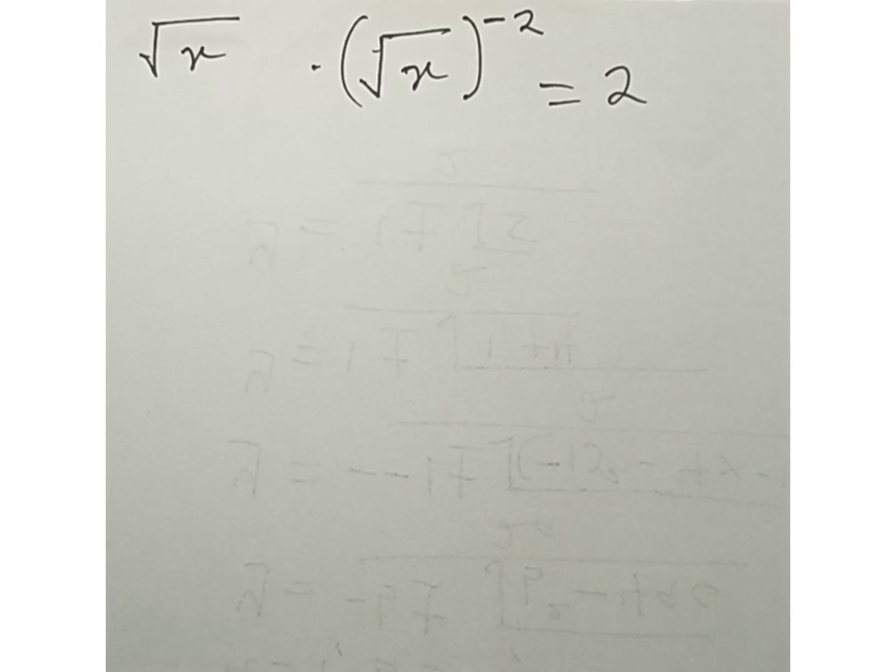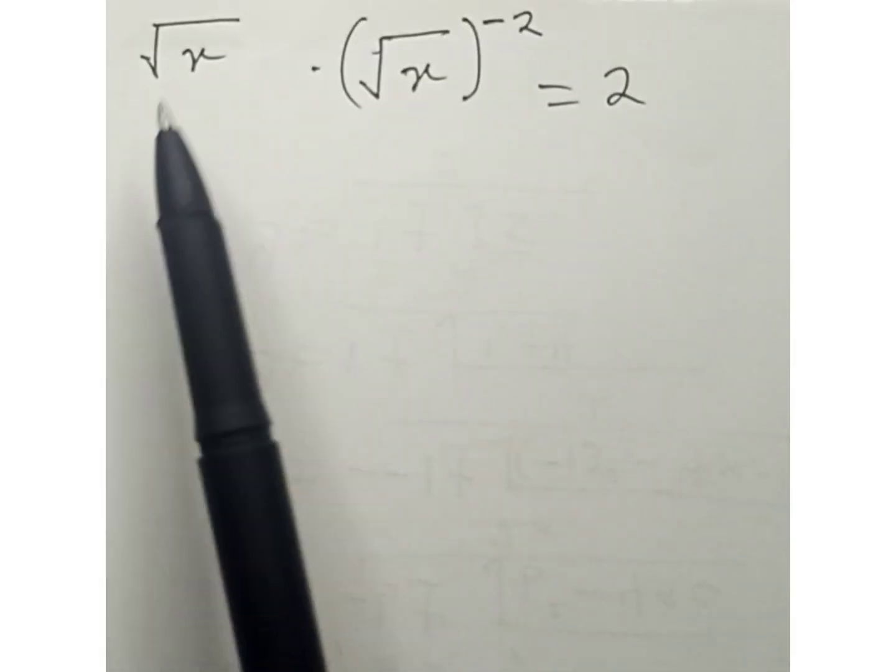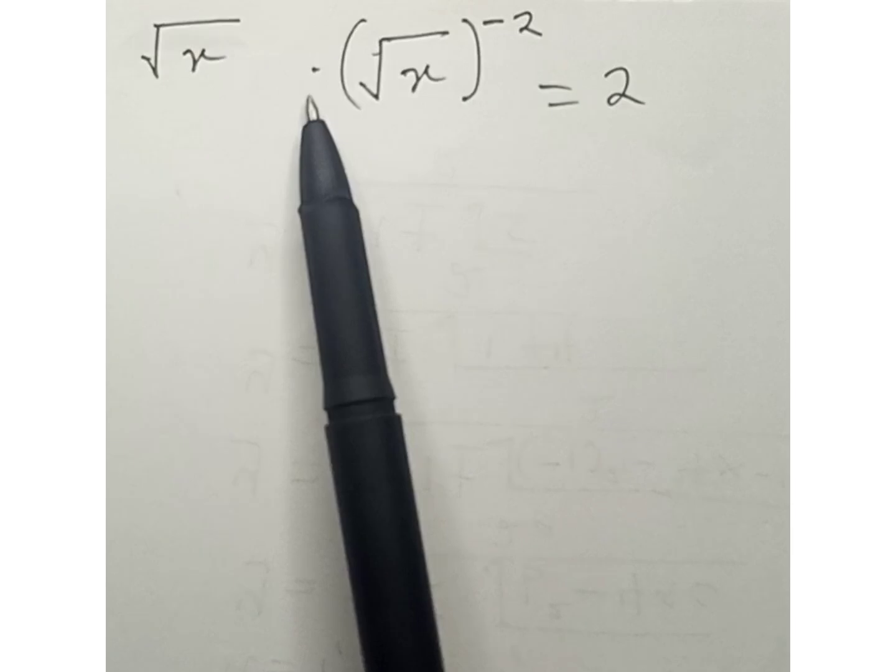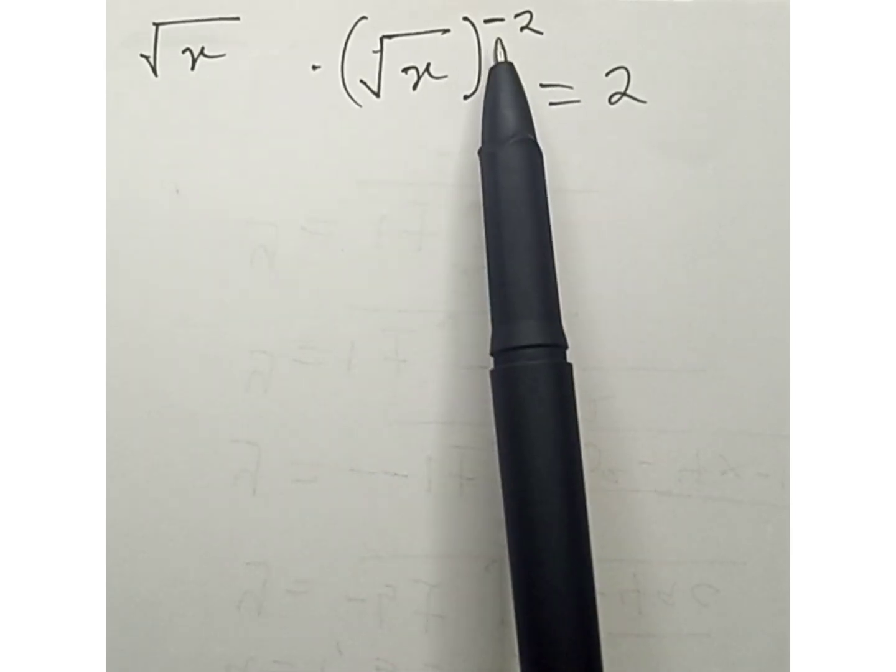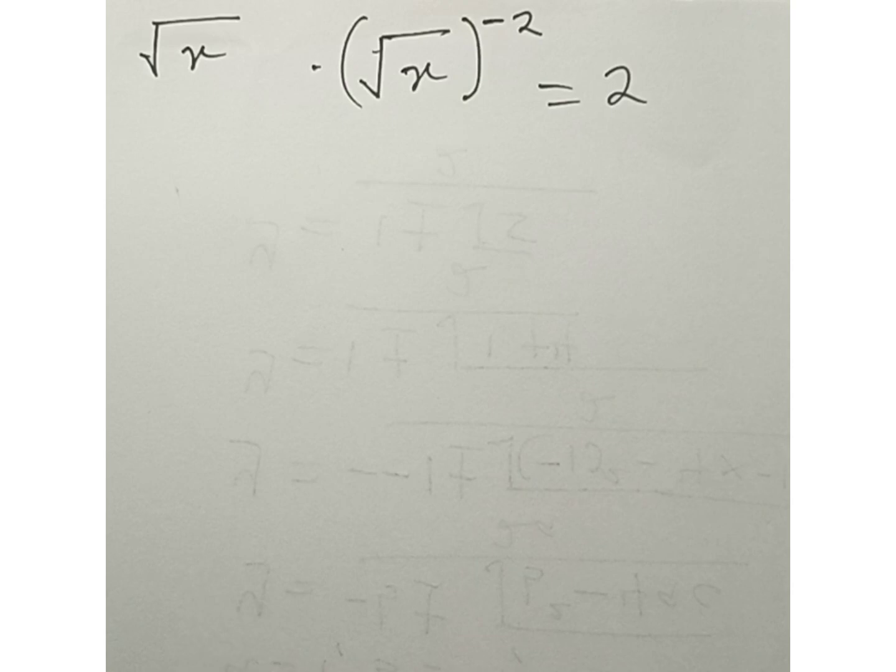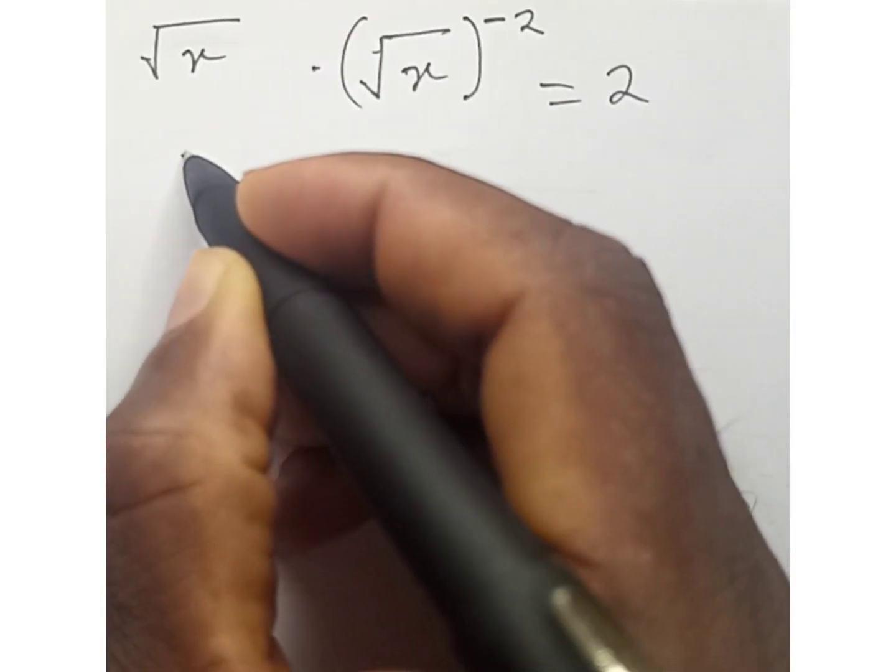Hi everyone, let's solve this: √x · (√x)^(-2) = 2. So to solve this, we're going to have something like this: √x